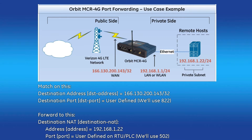In this video, I'll use the system pictured here to set up a port forward rule to pull the remote host. The Orbit MCR4G has a public IP address assigned from the cell network of 166.130.200.143 and a private IP of 192.168.1.1. The remote host off the Orbit MCR4G's ethernet port has an IP address of 192.168.1.22, listening for poll requests on port 502.